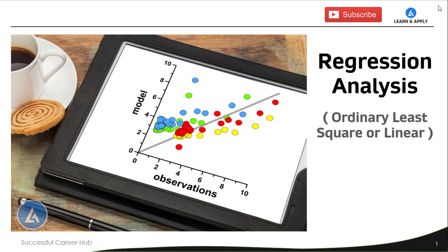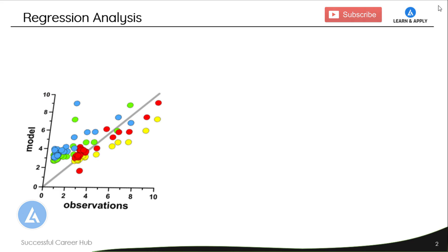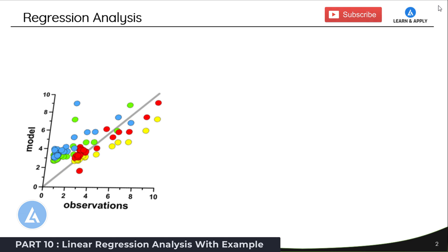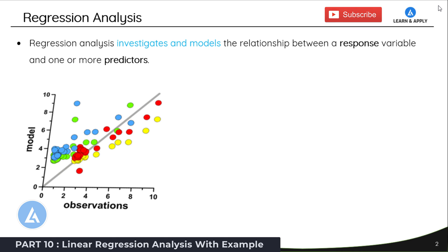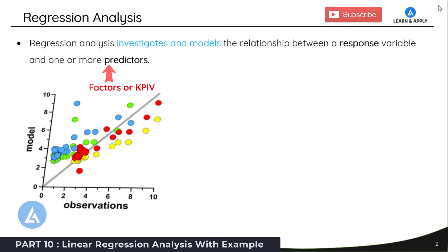Let's start with the understanding of regression analysis. What is regression analysis? Regression analysis investigates and models the relationship between a response variable and one or more predictors. The response variable is also called the output variable or key process output variable in statistical terms, whereas the predictors are also called factors or key process input variables.